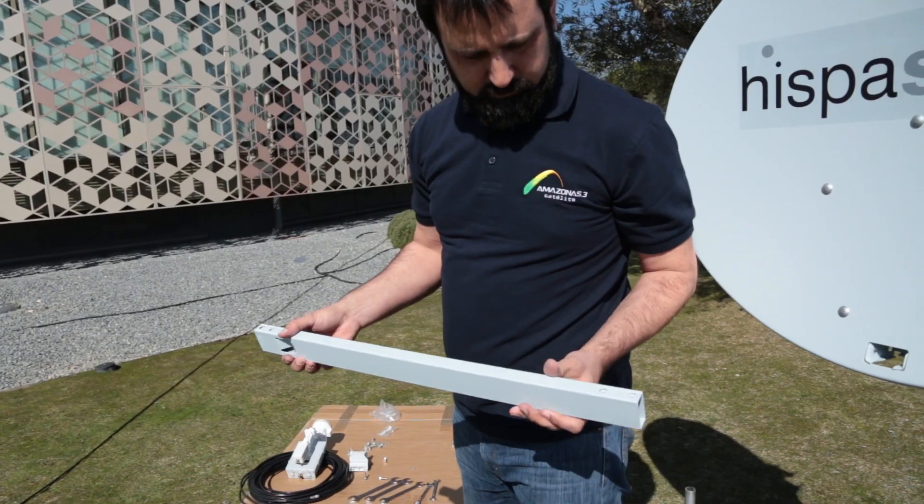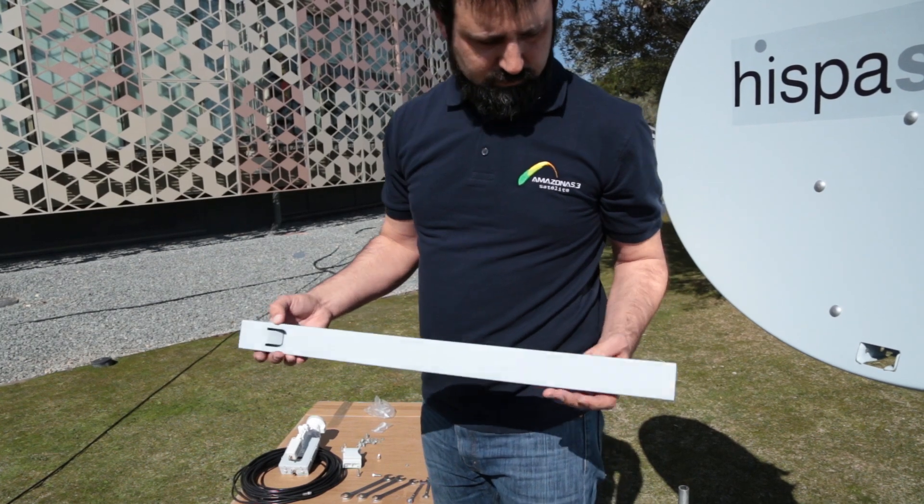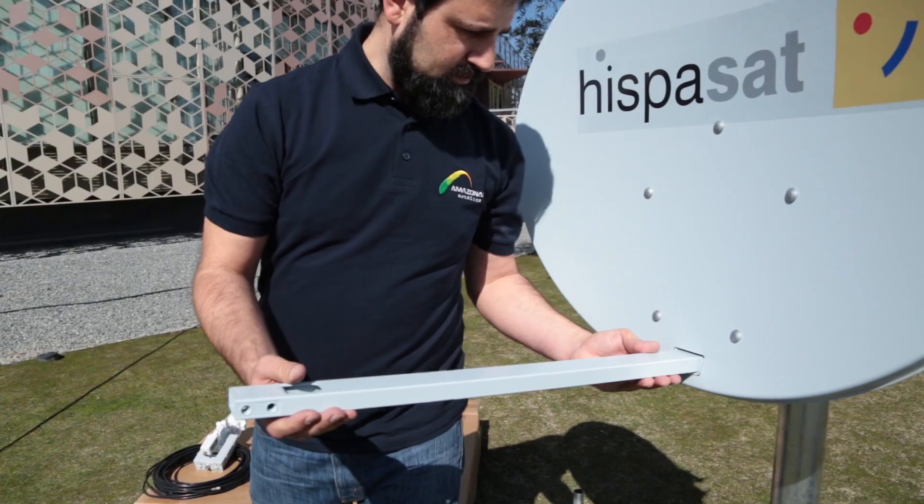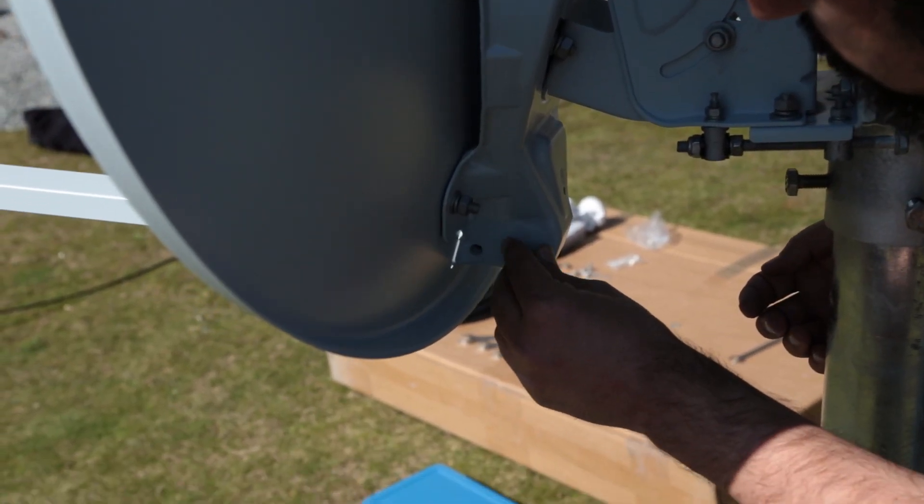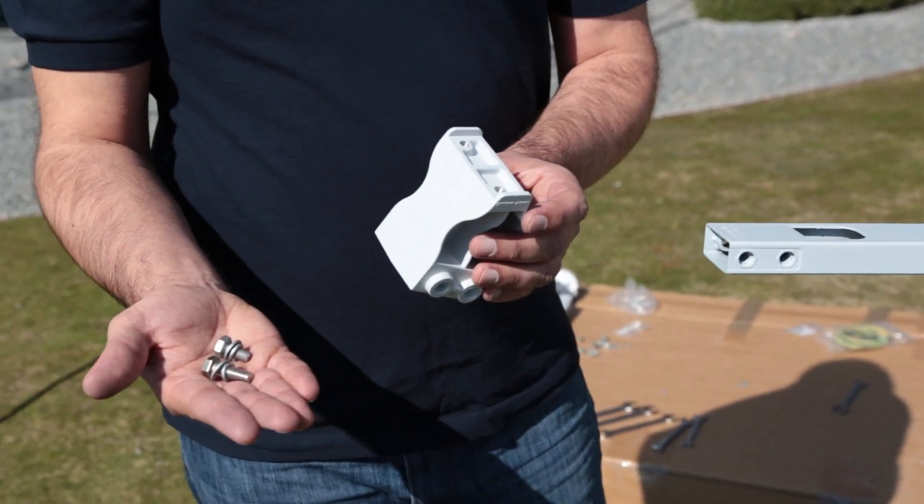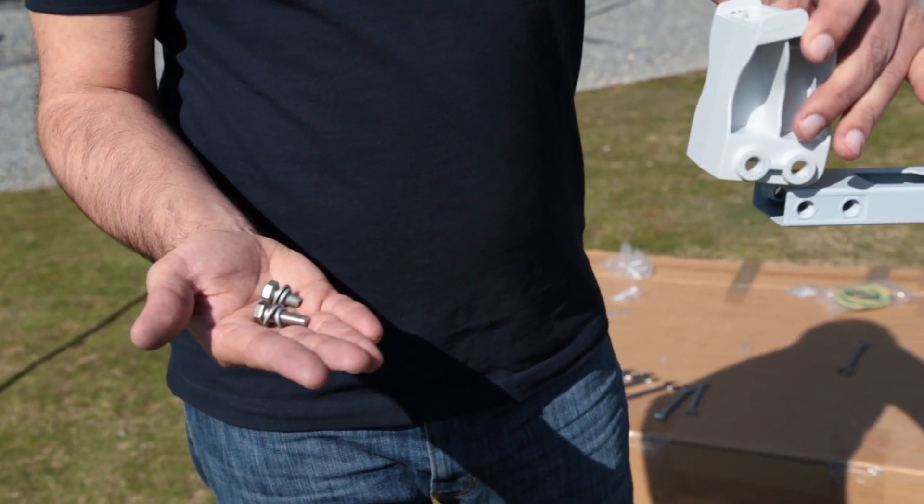The next step is to fasten the mast to the antenna. To do so, first check that its position is correct and then you must tighten the bolts. Then, fasten the feed support to the end of the mast, again ensuring that its position is correct.